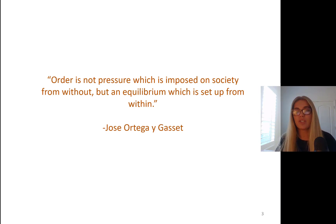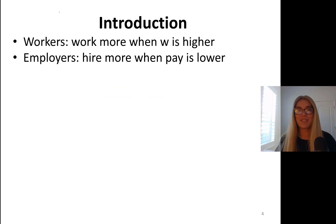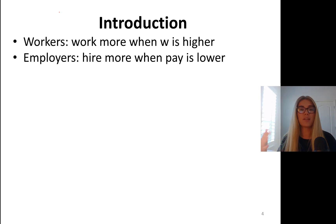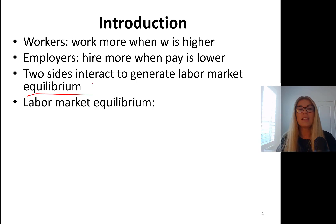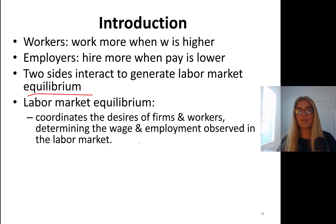"Order is not pressure which is imposed on society from without, but an equilibrium which is set up from within." So order comes from equilibrium. Workers work more when wages are higher — more hours, they supply their labor more. Employers hire more employment hours when pay is lower. So two sides interact to generate the labor market equilibrium — it sounds like they have conflicting desires, but it really is not. Labor market equilibrium coordinates the wants and needs of companies and the labor supply of workers, with desires of firms and workers determining the wage and employment observed in the labor market.